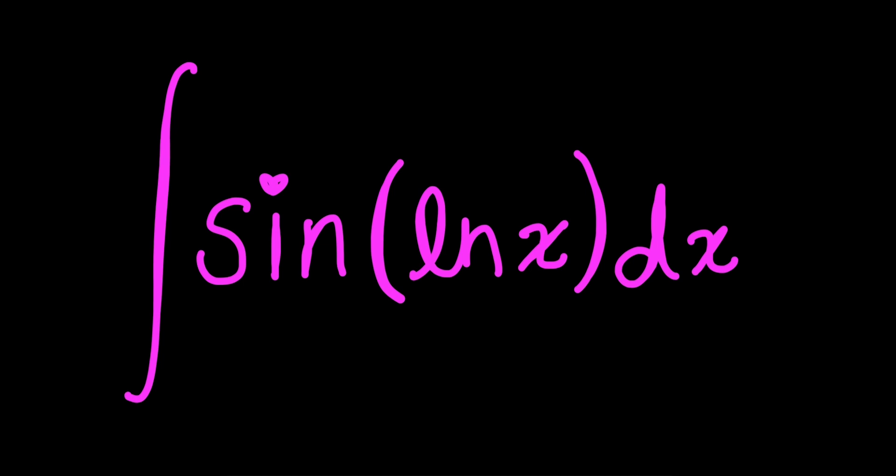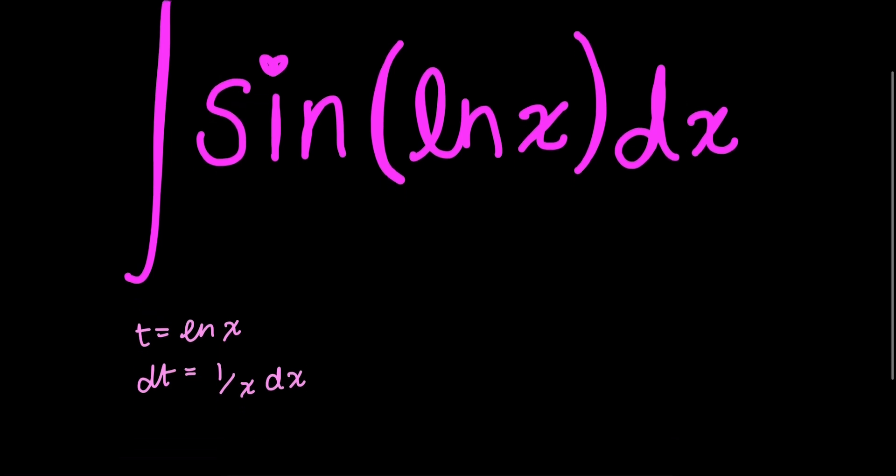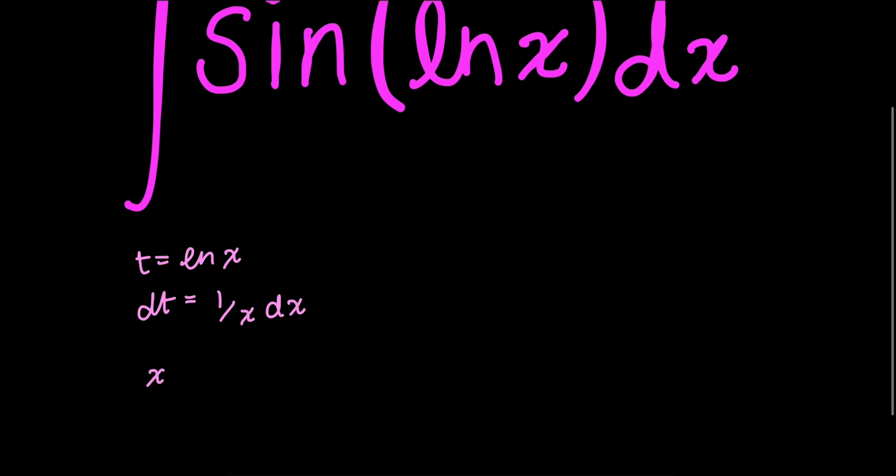Now I have a function within a function, so my instinct is to do some sort of substitution. So I'm going to define a variable t as my inner function ln x. And so I have dt is equal to the derivative of log of x, which is 1 over x dx. And now I want this to match what I have present in my integral. So I have x dt is equal to dx. So using my properties of log, I can define x as e to the t.